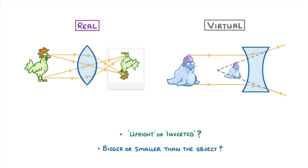So in our example on the left, the image would be real, inverted, and smaller than the object.